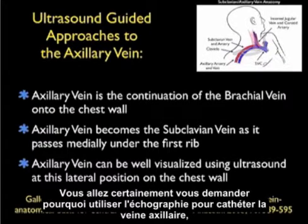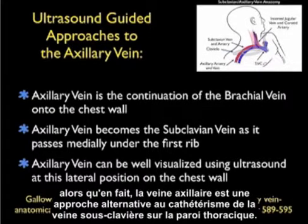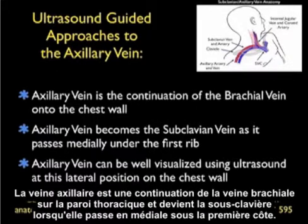Why would you want to use ultrasound to cannulate the axillary vein? In effect, the axillary vein is an alternative approach to cannulation of the subclavian vein on the chest wall. The axillary vein is a continuation of the brachial vein onto the chest wall and becomes the subclavian vein as it passes medially under the first rib.